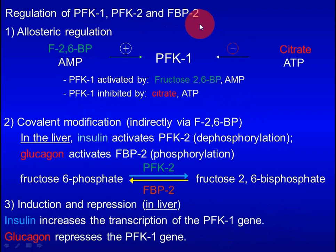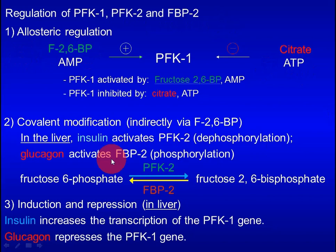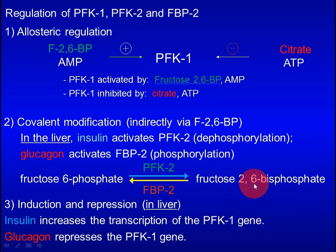PFK1, PFK2, and FBP2 are subject to three types of regulation. First, PFK1 is an allosteric enzyme — it is activated by fructose-2,6-bisphosphate and inhibited by citrate and ATP. Second, in the liver, insulin activates PFK2 by dephosphorylation, and glucagon activates FBP2 by phosphorylation. When insulin level is high, PFK2 is active, fructose-2,6-bisphosphate level is high, this activates PFK1, and glycolysis is robust. When glucagon level is high, FBP2 is activated, fructose-2,6-bisphosphate level is low, and glycolysis is not stimulated.